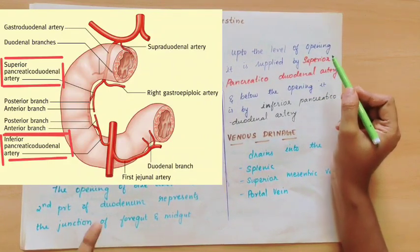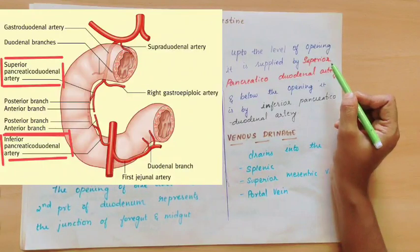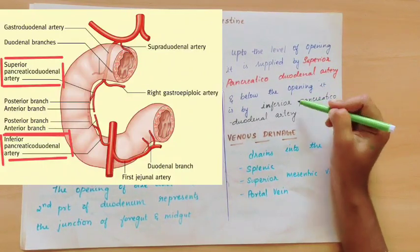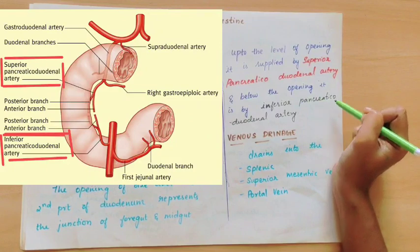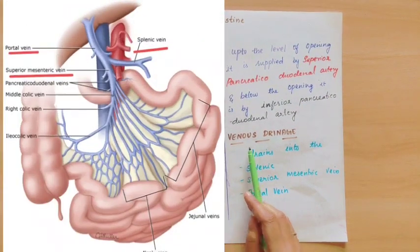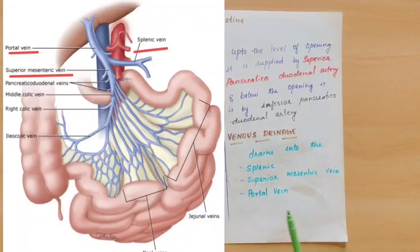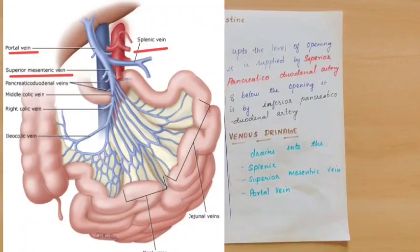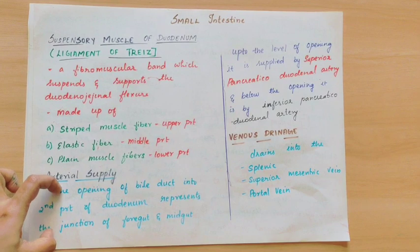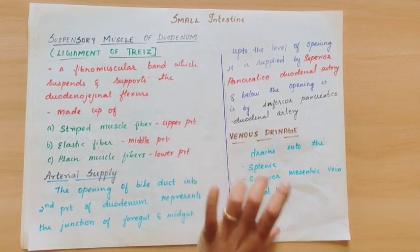So above the opening of the bile duct, the arterial supply is from the superior pancreaticoduodenal artery. Below the opening of the bile duct, it is supplied by the inferior pancreaticoduodenal artery. Coming to the venous drainage: splenic vein, superior mesenteric vein, and portal vein drain the duodenum. This is all about the suspensory muscle of the duodenum, arterial supply of the duodenum, and venous drainage of the duodenum.